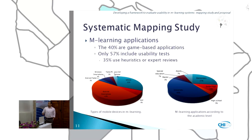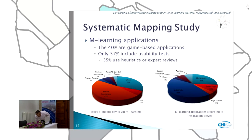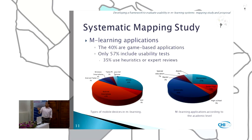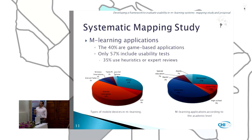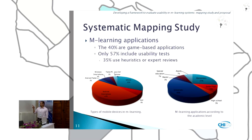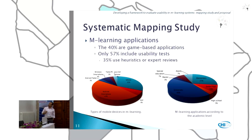Regarding M-Learning applications by academic level, we found that 43% of applications were for university students, 32% for elementary students, 3% for high school, 7% for special education, and 3% for master's level students.